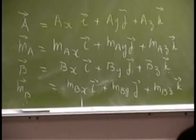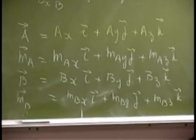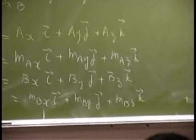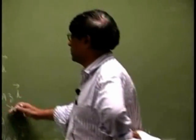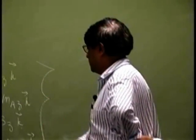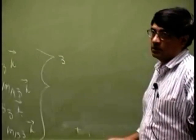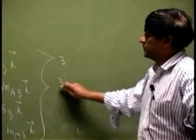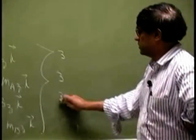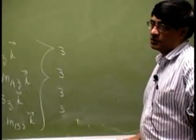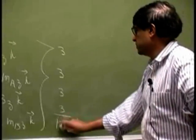We have the force A and B with three unknown components. Then you have couples MA and MB also with three unknown components. So if you do a count, you got three unknowns here - all three are components. You have three unknowns here, you have three unknowns here, and three unknowns here. All adds up to 12.